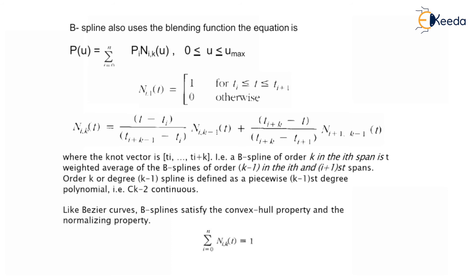So B-spline of order k. Sum of the order is k in the ith span is to be the weighted average of the B-spline of order k-1 in the ith and i+1th spans. Order k or degree k-1 spline is defined as a piecewise k-1 degree polynomial that is Ck-2 continuous.